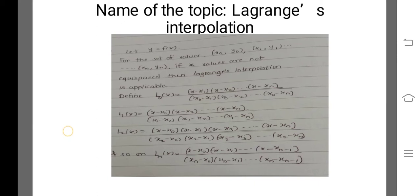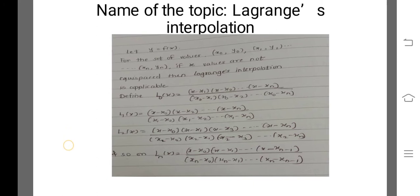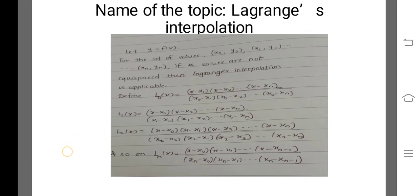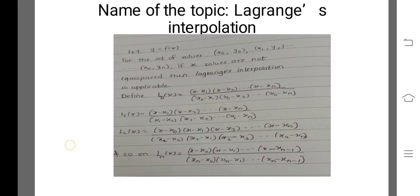Many times while interpolating, the x-values are not equispaced. In such cases, we cannot use Newton's Forward or Backward Difference Interpolation. For finding the interpolating polynomial, we apply Lagrange's Interpolation.